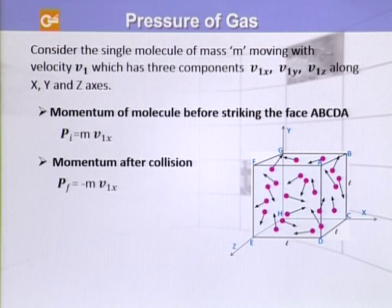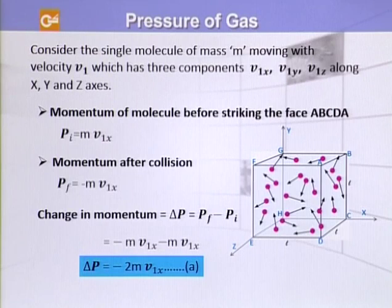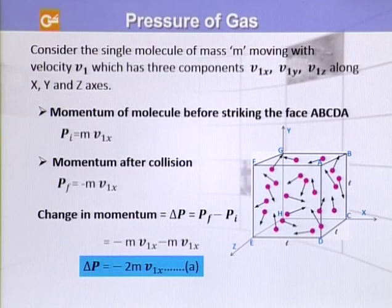Minus means the direction is opposite. The initial momentum was Pi = mV1X, and the final momentum is Pf = −mV1X. So we see what the total change in momentum is — that is delta P = Pf − Pi. If we put in the values, we find that delta P = −2mV1X. We call this equation A.